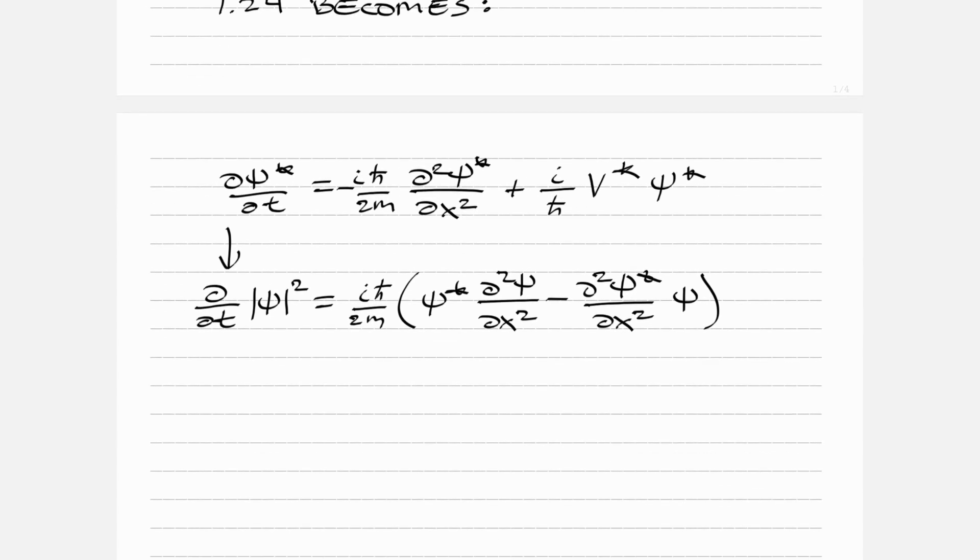Again, we're just following equation 1.25 in the book, so if you don't see it go to the book and refresh on what was going on. This equals the partial derivative with respect to x of iℏ bar over 2m times ψ* dψ/dx minus dψ*/dx times ψ.